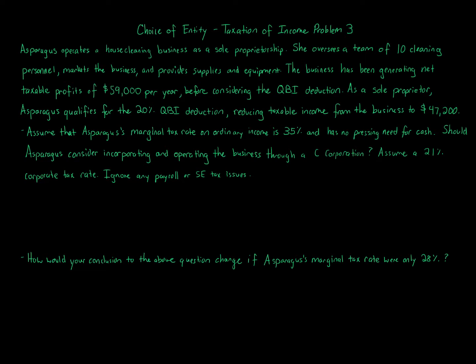This is one of my favorite problems because it looks at different entities in a simple format. When we look at choice of entity, there's not one answer for everybody. It really comes down to facts and circumstances. This problem shows you that in certain situations mathematically, depending on the facts, it can help being a C corporation, especially if you can retain earnings and not have to pay out cash immediately.